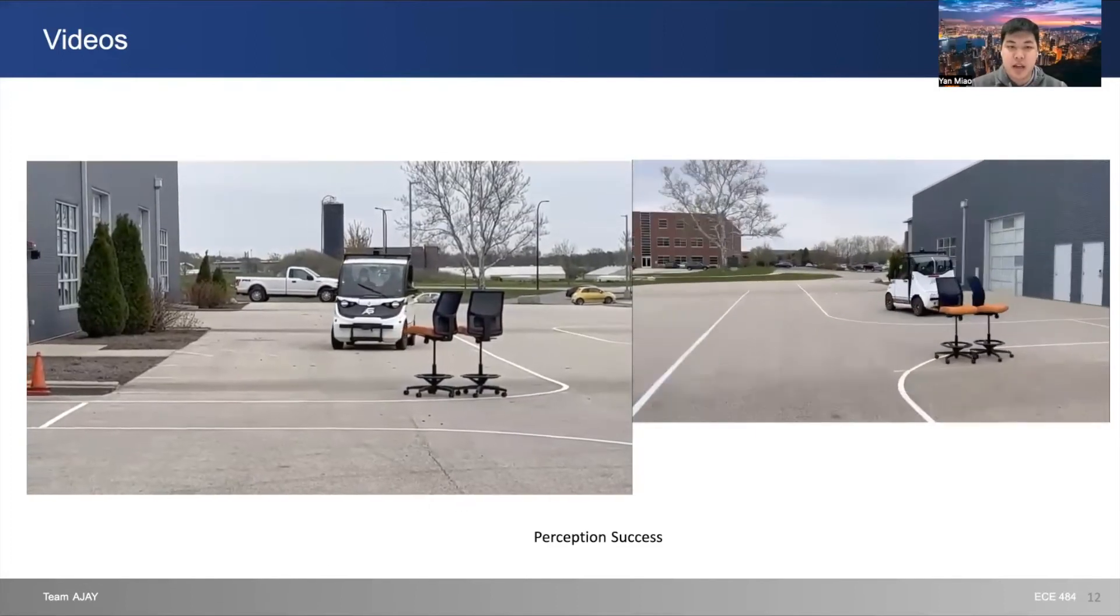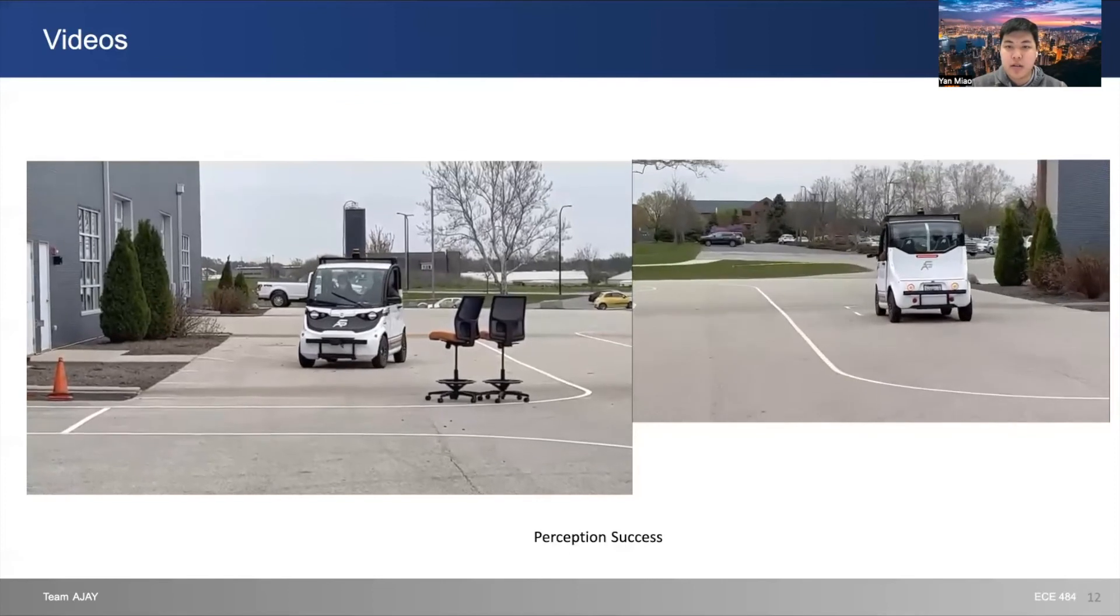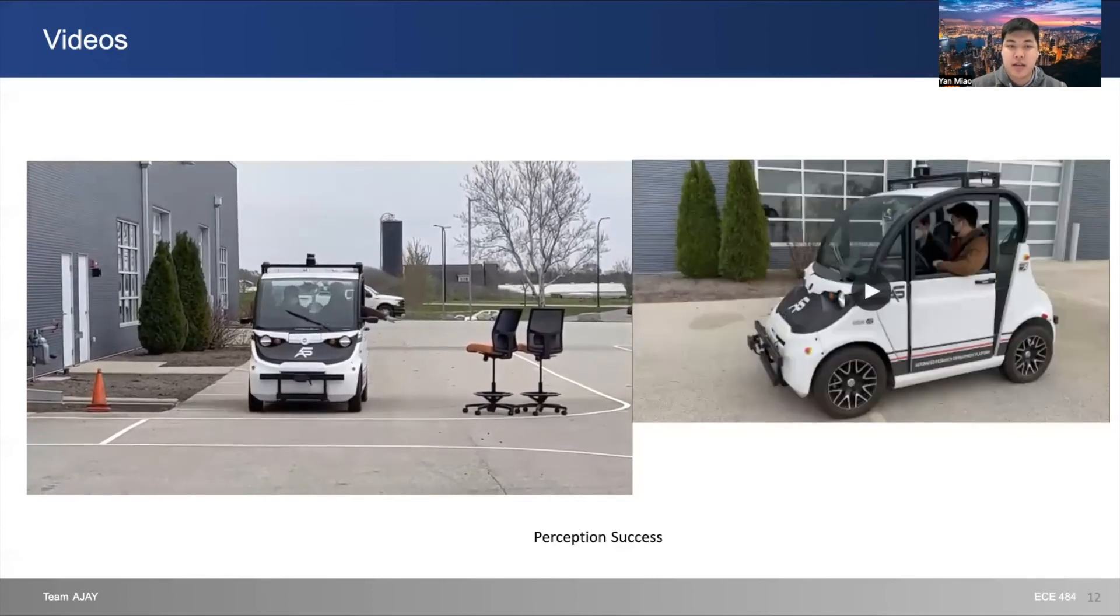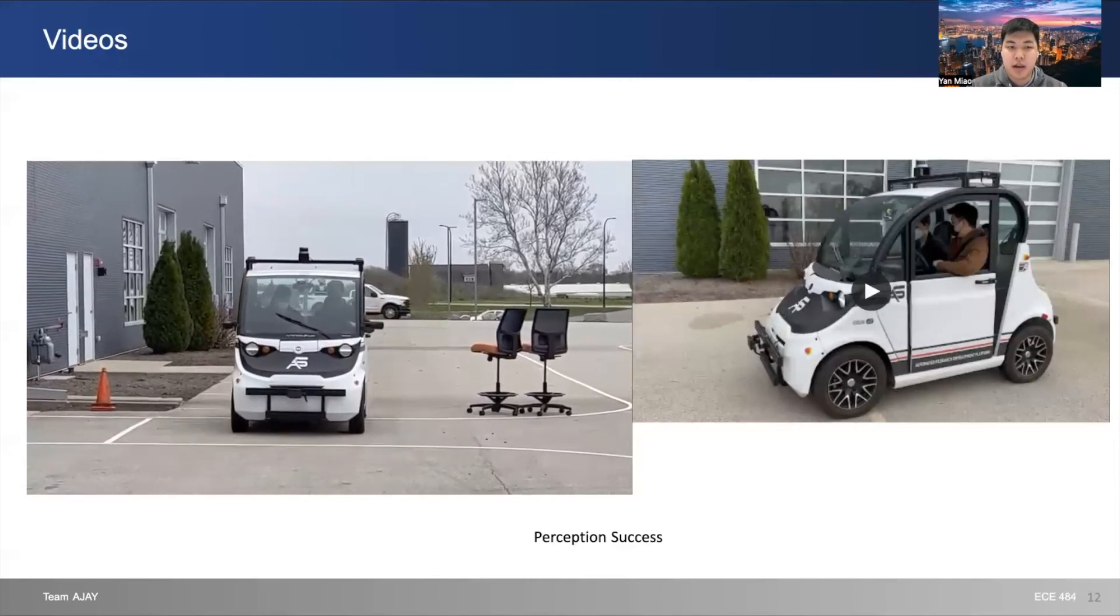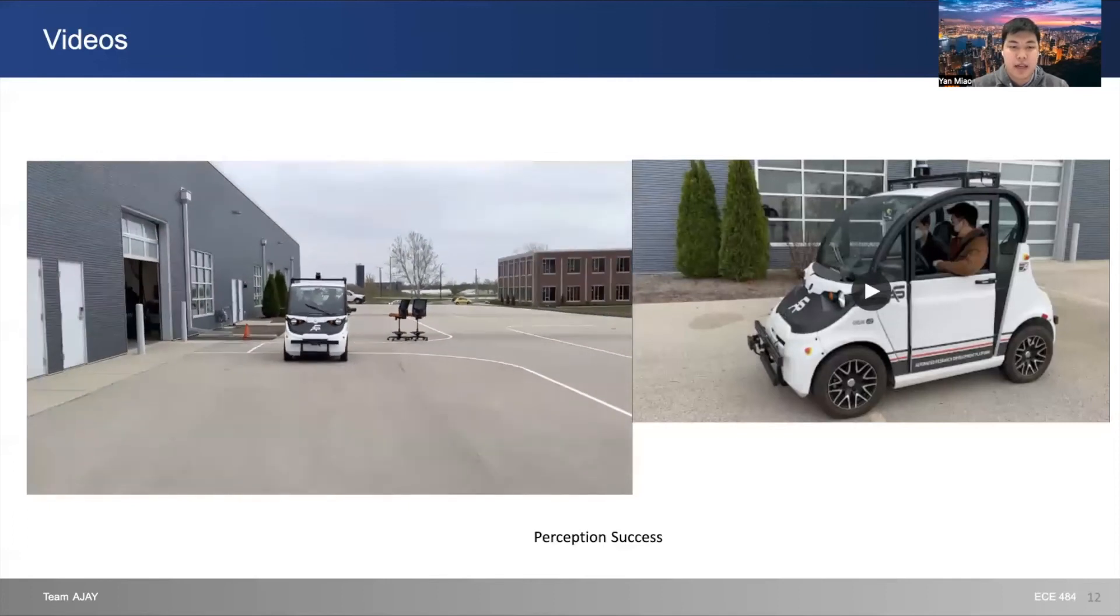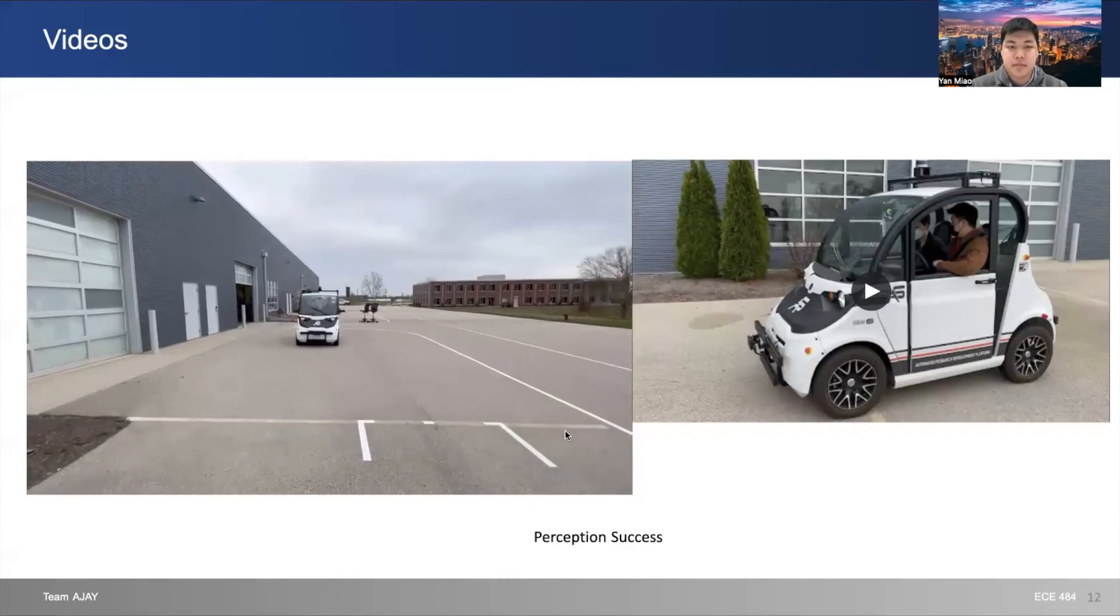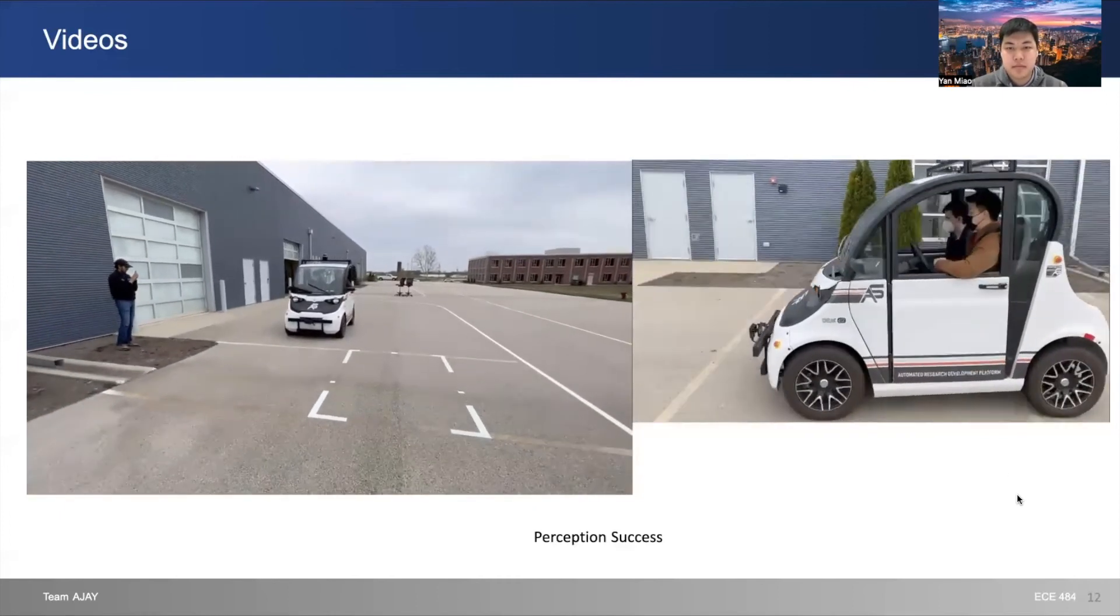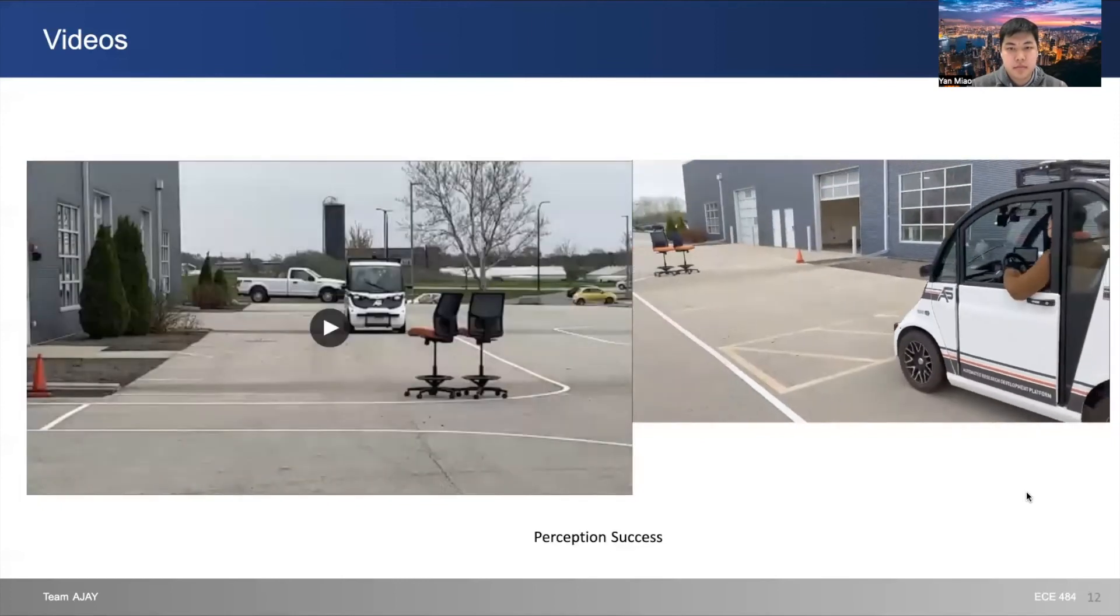This is a scenario where we involve the perception unit. Our GEM vehicle goes around the obstacle, which we set as two chairs. You can see it goes around the obstacle and carefully arrives at the parking spot successfully.